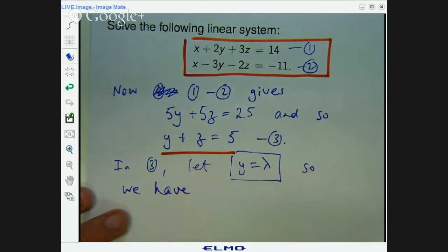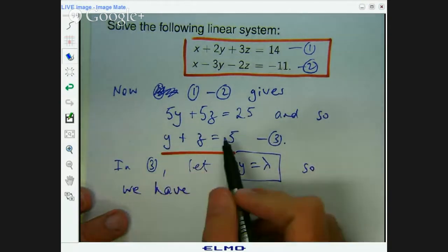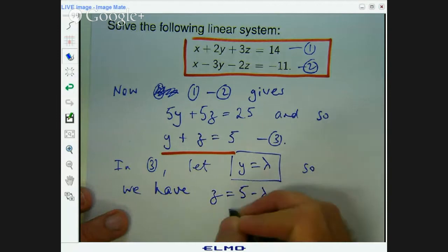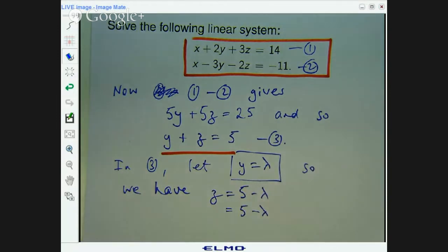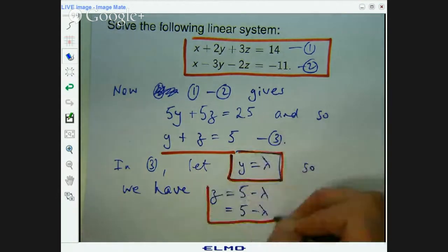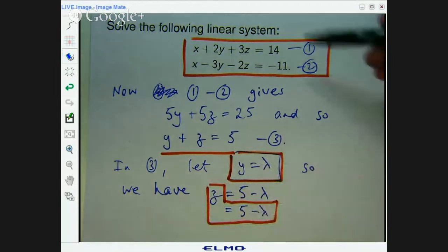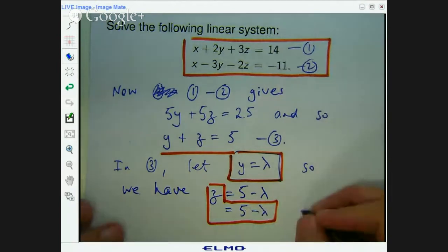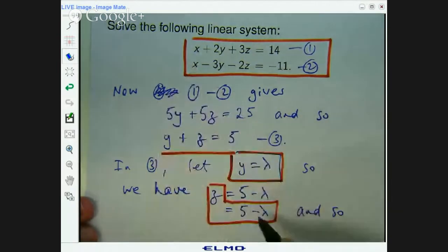So in three, if I rearrange, I'll get y equals five, z equals five minus y, and that's just five minus lambda. So I've got, if y is this parameter lambda, z then can be expressed in terms of lambda. And we can go back to one to express x in terms of lambda.